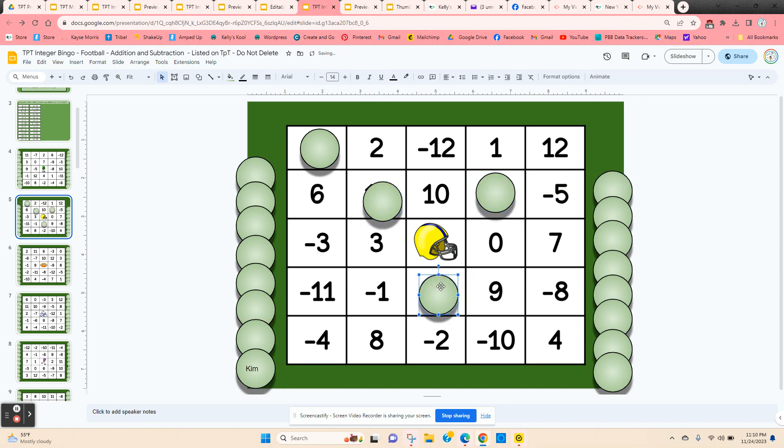Once they get five in a row, they can call out bingo. If you want to check their answers, just have them move these chips to the side and that way you can check and see if they're correct.